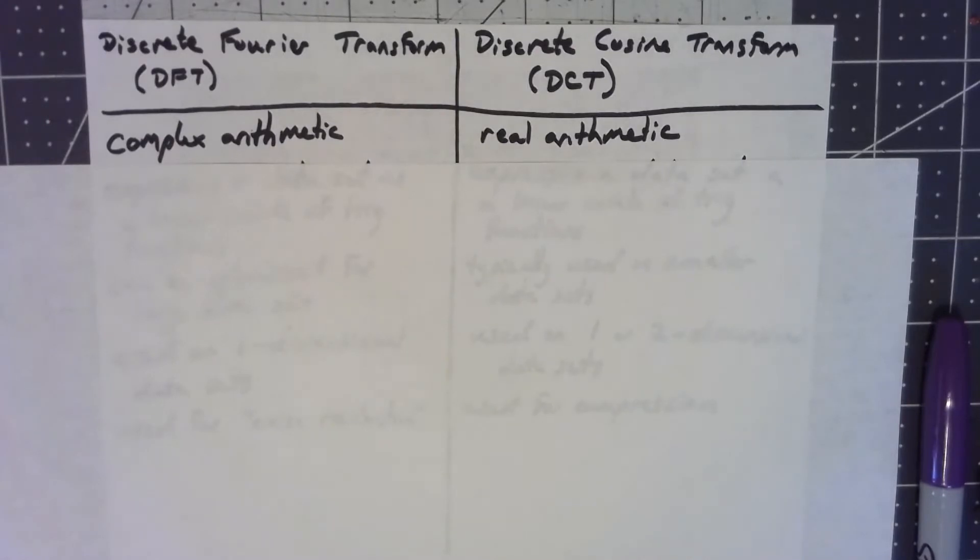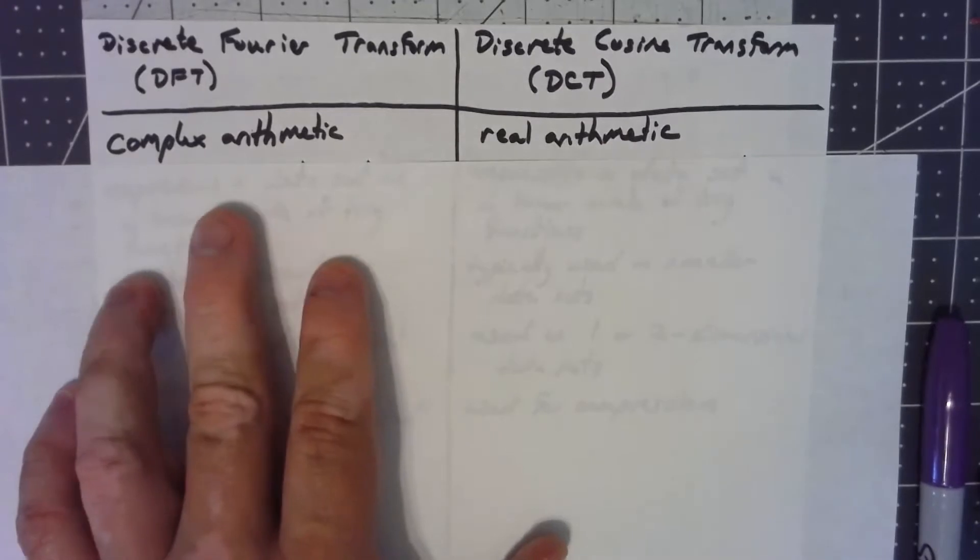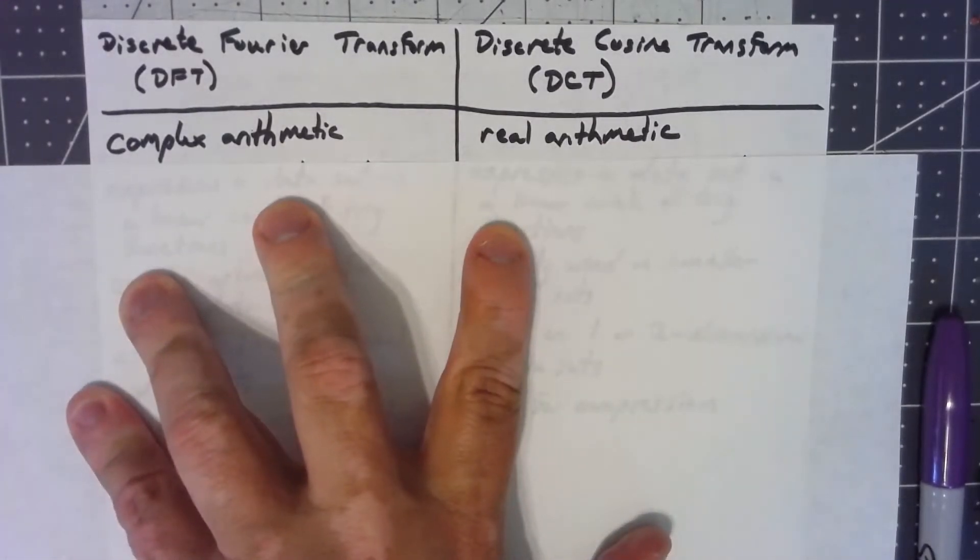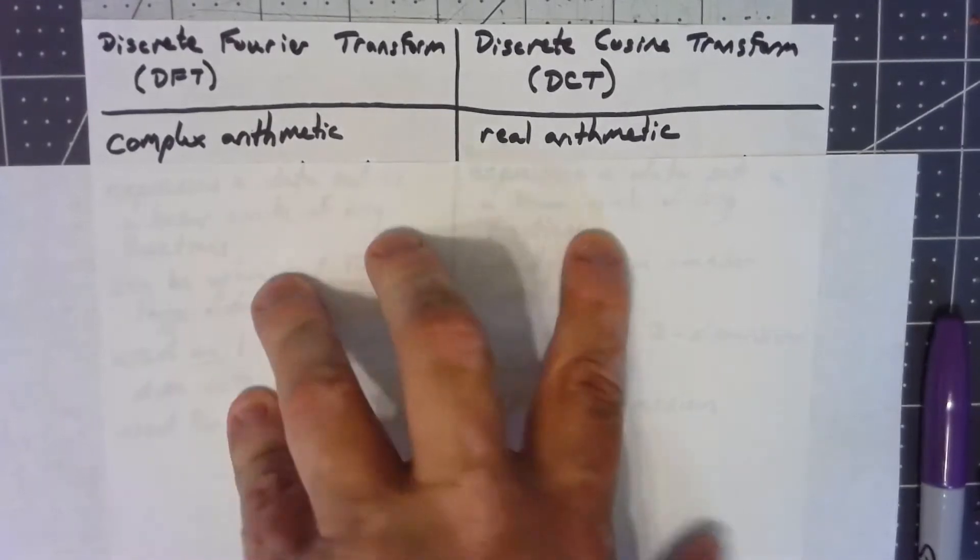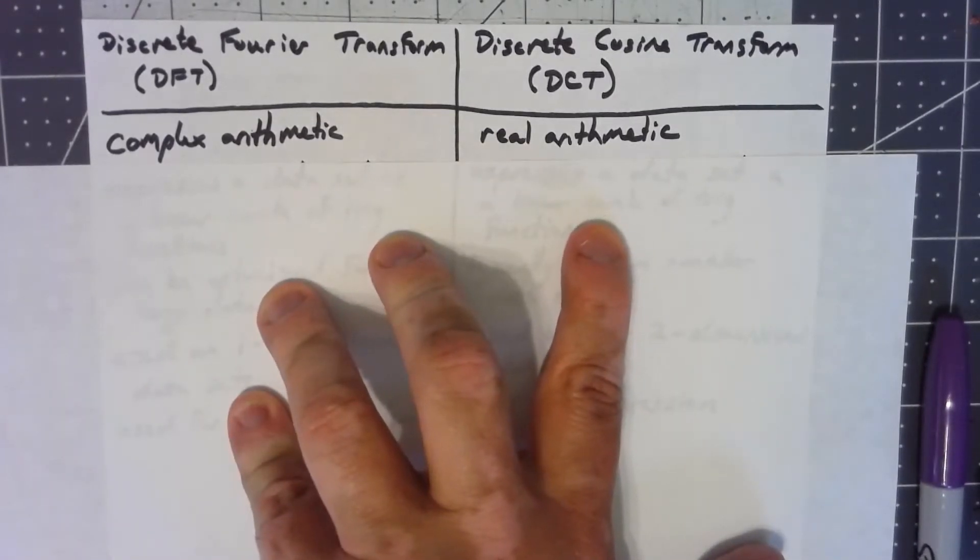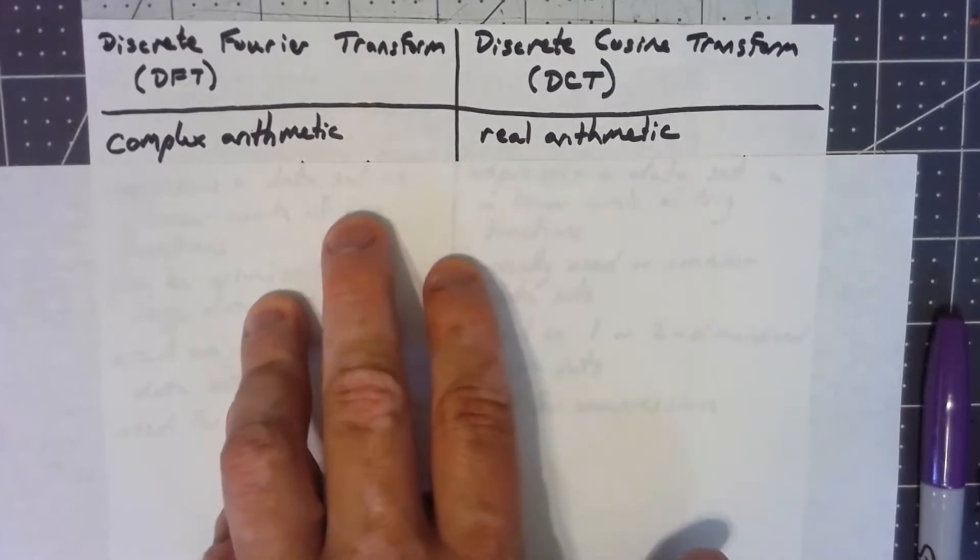The most important one is that the discrete Fourier transform is done with complex arithmetic, whereas the discrete cosine transform is done with real arithmetic. That means that if they were done in the same way, the discrete cosine transform would take about half as many operations as the Fourier transform does.